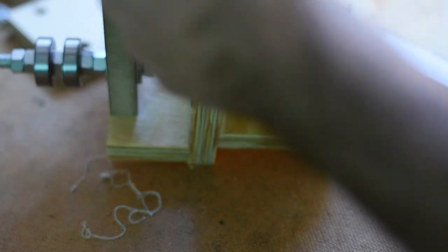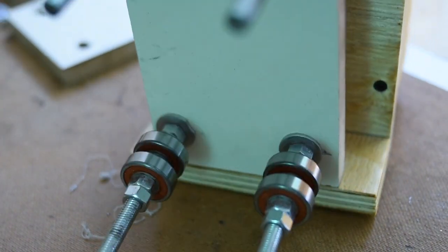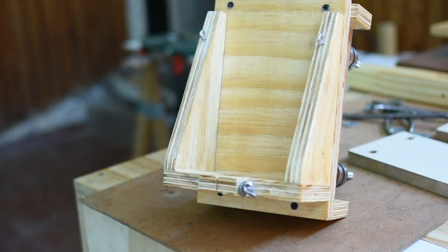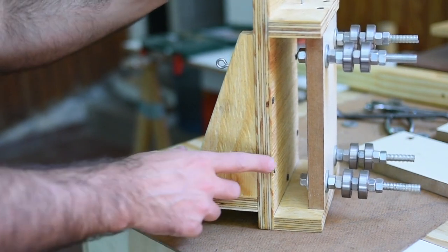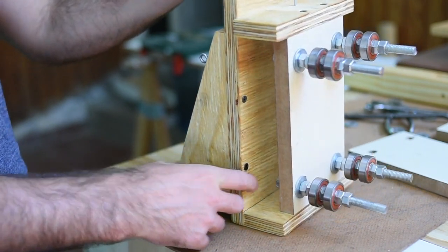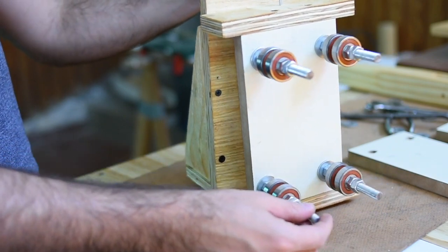Ahí lo pueden ver de costado, de frente. De frente verán la parte donde se coloca el taladro, que no es más que una parte circular, y se le hace un corte para que tenga un movimiento y con el tornillo se pueda apretar en la cabeza del taladro.